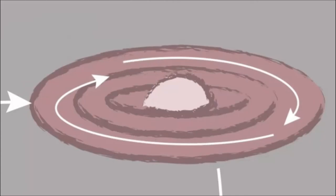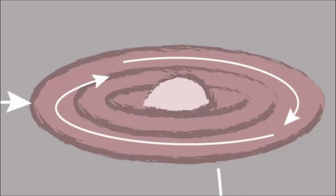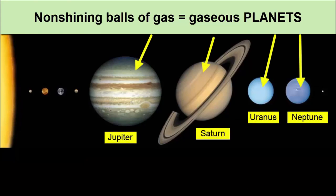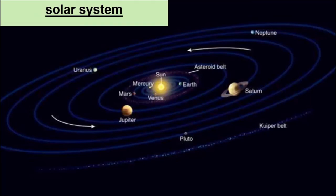Back to the rotating disk. Gas that is not part of the center star can go through similar collisions and accretion and create smaller, non-shining balls of gas that orbit the larger center star. These smaller balls with no nuclear fusion are called gaseous planets. The combination of a star and its orbiting planets is called a solar system.